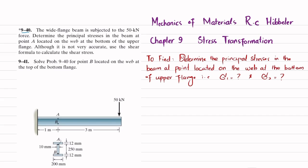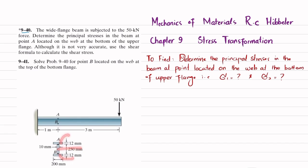The problem statement is: a wide flange beam is subjected to a 50 kN load. Determine the principal stresses in the beam at point B, located on the web at the top of the bottom flange. This is a cantilever beam acted upon by a 50 kN load at one end, with an I-beam cross section. We need to find the principal stresses at point B, located on the web at the top of the bottom flange.